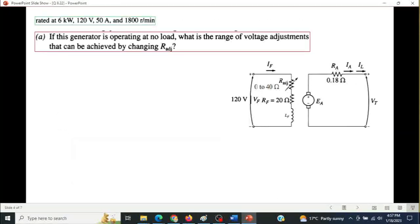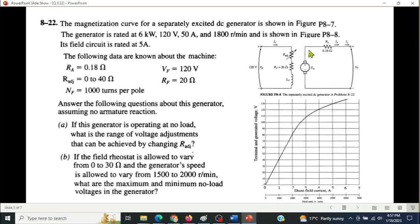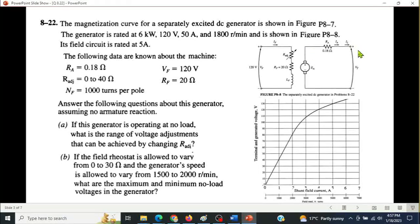Part A: if the generator is operating at no load, no load connected, current flow zero. At no load, the terminal voltage VT equals generated voltage EA. What is the range of the voltage adjustments that can be achieved by changing R adjustment? The output voltage which combined in our voltage.